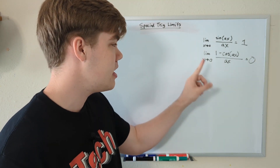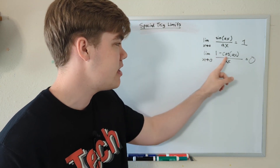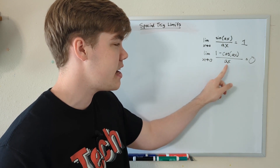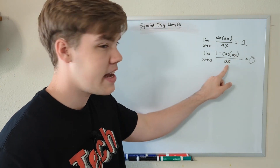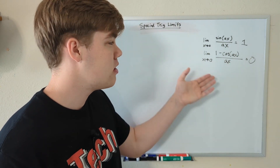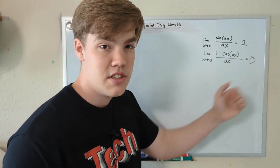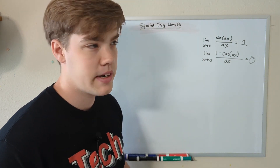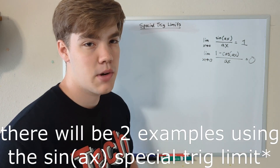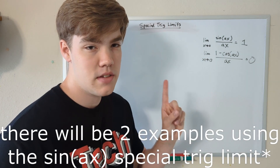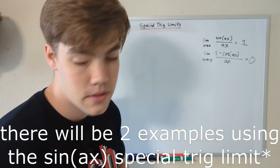The same applies for the second limit: the limit as x approaches zero of one minus cosine(ax) divided by ax. Once again, the ax on top and the ax on the bottom have to be the same thing in order for this entire limit to just equal zero. Instead of plugging in all your numbers and doing all the math, we already know what this is going to be equal to. Today, we're gonna do one example of each of these special trig limits, starting with the sine example.